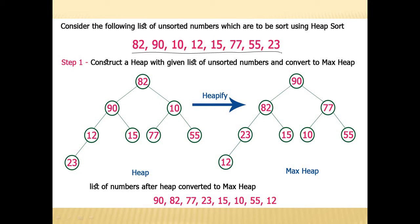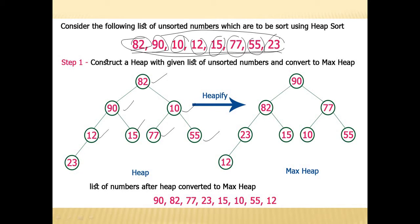First we need to construct a binary tree with these elements. The root element is 82, the next element 90 will come to the left side, and 10 will come to the right side. Then 12 is a child of 90, 15 is also a child of 90, 77 is a child of 10, 55 is a child of 10, and 23 is a child of 12. We are just arranging the elements in a binary tree without following any specific rules. But according to our algorithm, the tree should be a heap tree — and currently it is not.